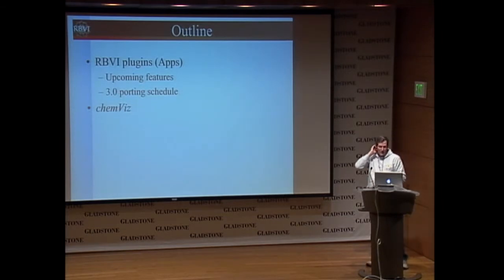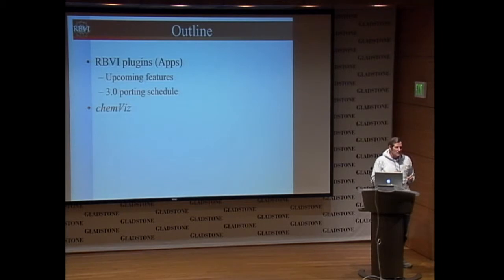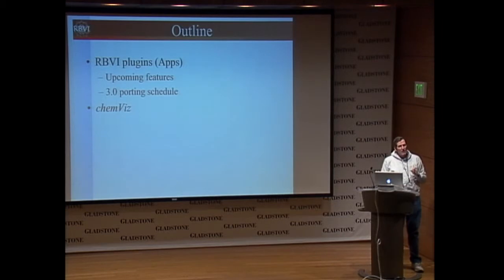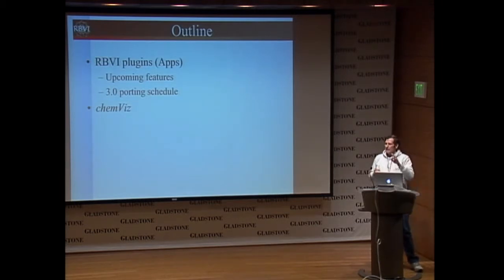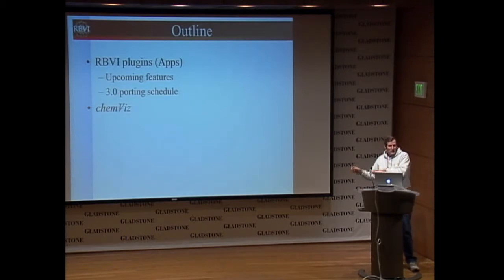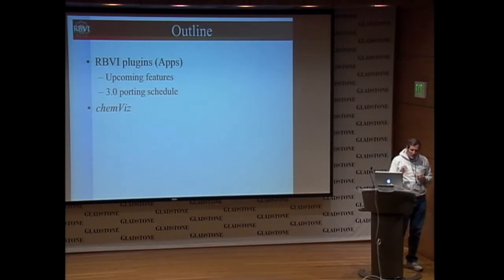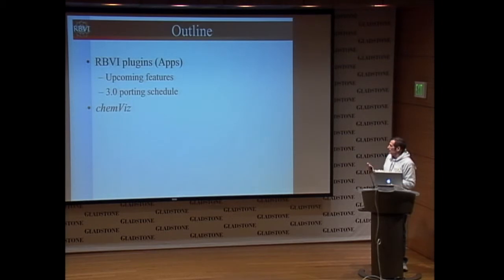I'm going to very quickly go through the top order of the RBVI plugins, which will be apps as time goes on. I want to hit on what features are upcoming that we're currently working on, and what I'm thinking in terms of my porting schedule for getting these over to 3.0. If anybody has spare time and wants to help me get things over to 3.0, I'd love the help. At the end, I'm going to talk about one app in particular that I've been doing a lot of work on lately, which is ChemViz.